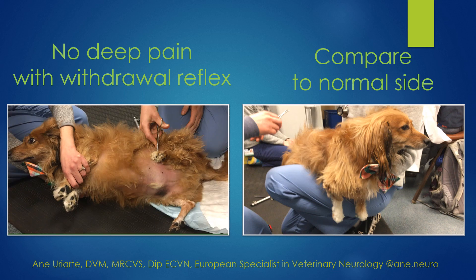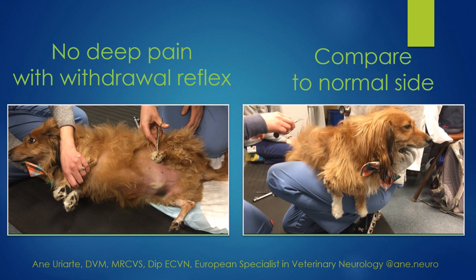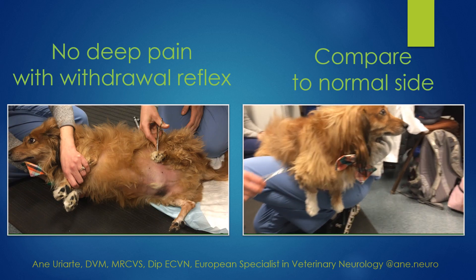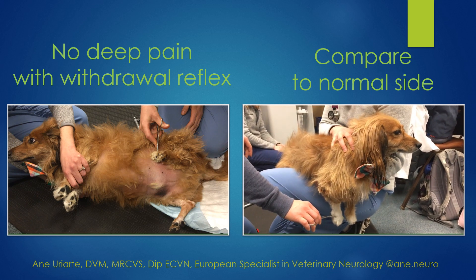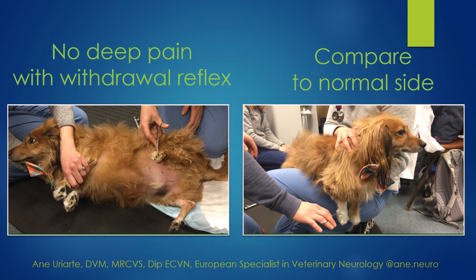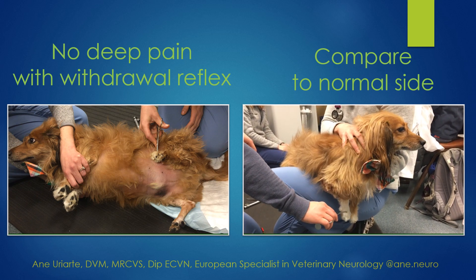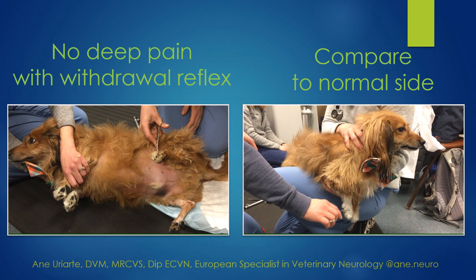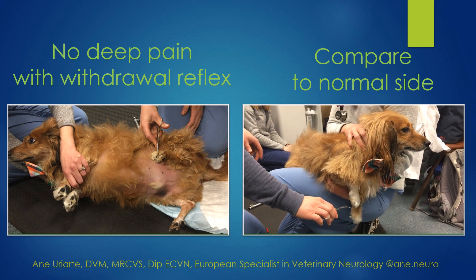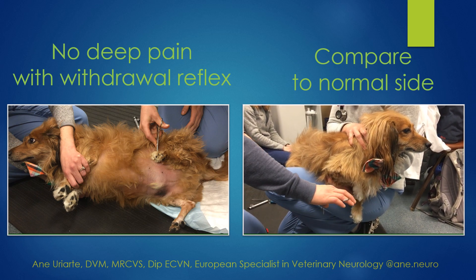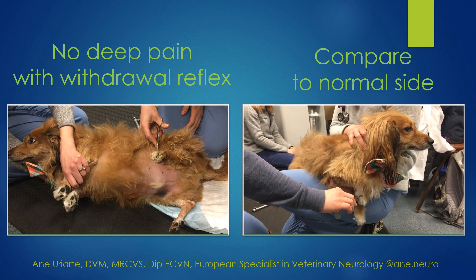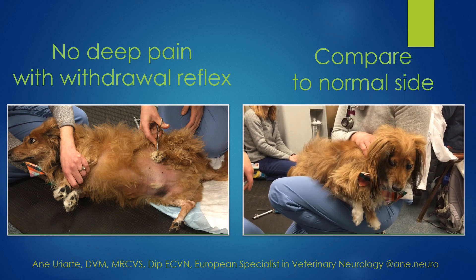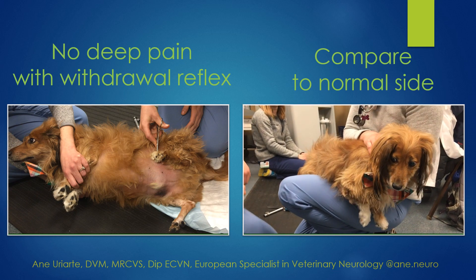How do we know that this dog cannot feel? Because if you check the same dog on a normal leg, look at the lips — how he is telling us that he can feel that. He's doing a withdrawal reflex, but he's also telling us that he can feel it and he doesn't like it.